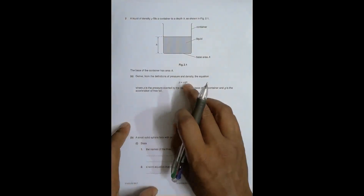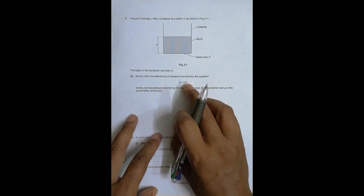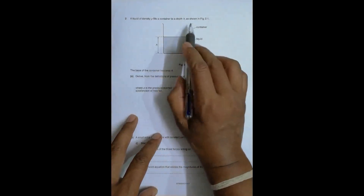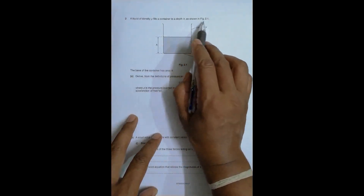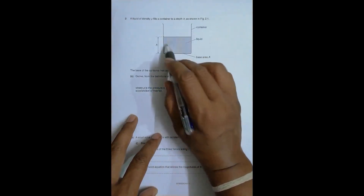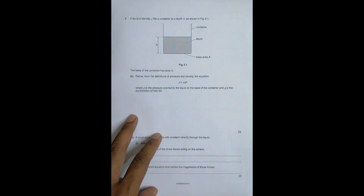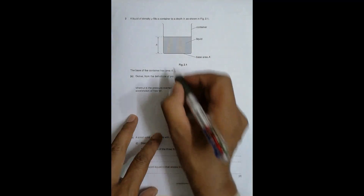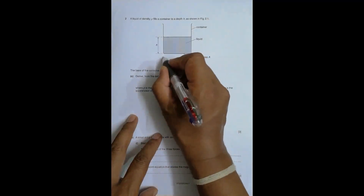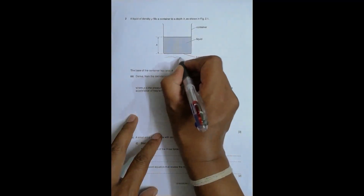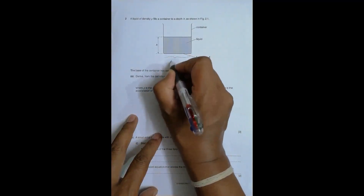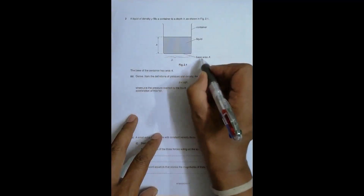The question says that a liquid of density rho fills a container to a depth H, as shown in Figure 2.1. The base of the container has area A — this is the area of the base, as written here.